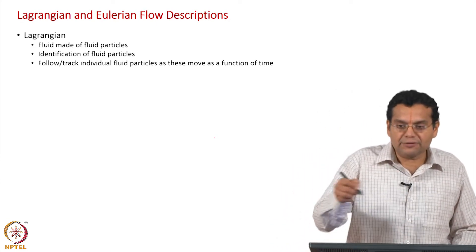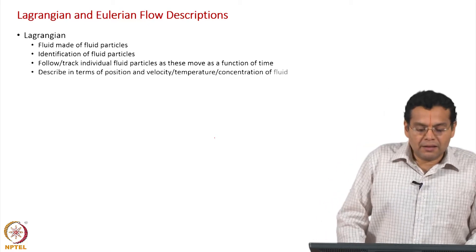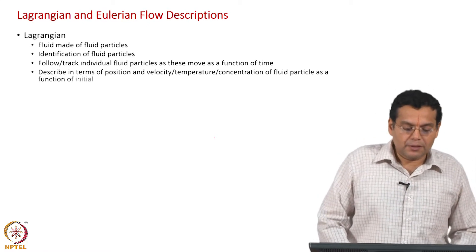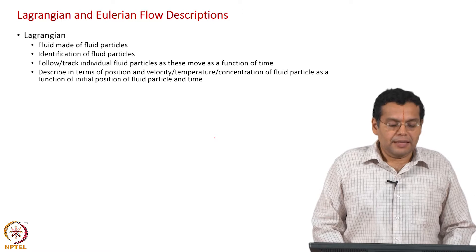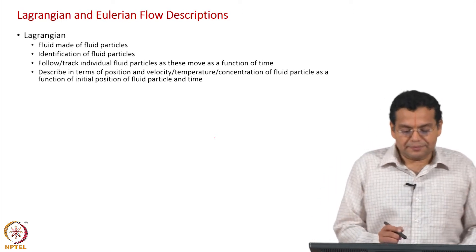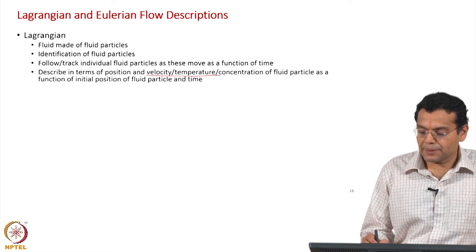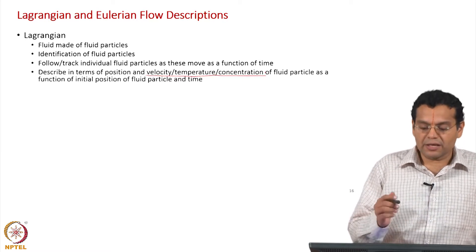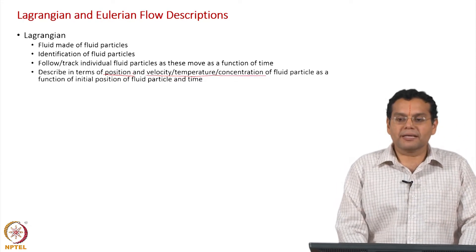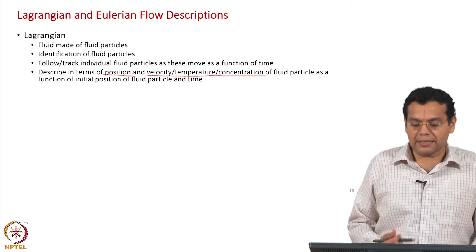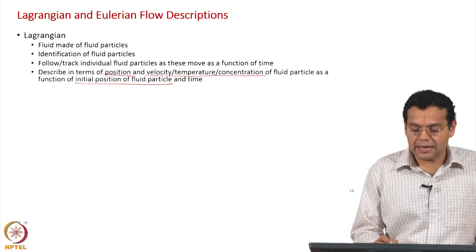In all cases we track the fluid particles as they move in the region of interest, and then describe them in terms of position, velocity, temperature, and concentration of the fluid particle as a function of its initial position and time. The dependent variable is velocity, temperature, or concentration — whichever we are interested in. Because we are tracking the particles, position also becomes a dependent variable. The independent variables are the initial position of the fluid particle, denoted as r-naught, and time.